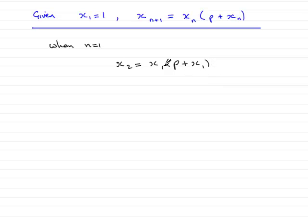But we know what x1 is—x1 is 1. So we can write 1 in there, multiplied by (p + 1), and that simplifies to p + 1.